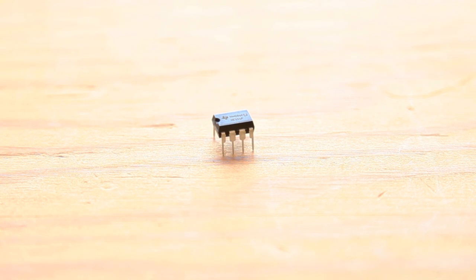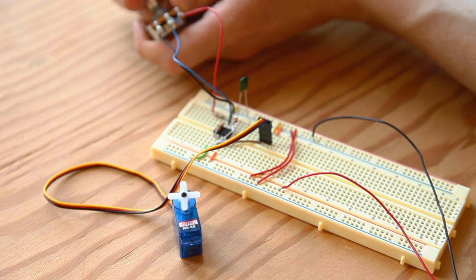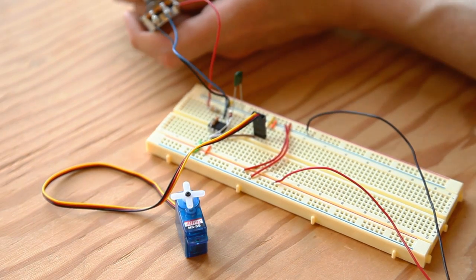and today we're going to show you three breadboard based experiments for motor controllers using the ubiquitous 555 timer chip. Using little more than the 555, some common components, and a few logic chips, we're going to show you how to control a DC motor, a servo motor, and a stepper motor. By doing these experiments, you're going to learn the basics of these motor types and how to make them go. Let's get started.